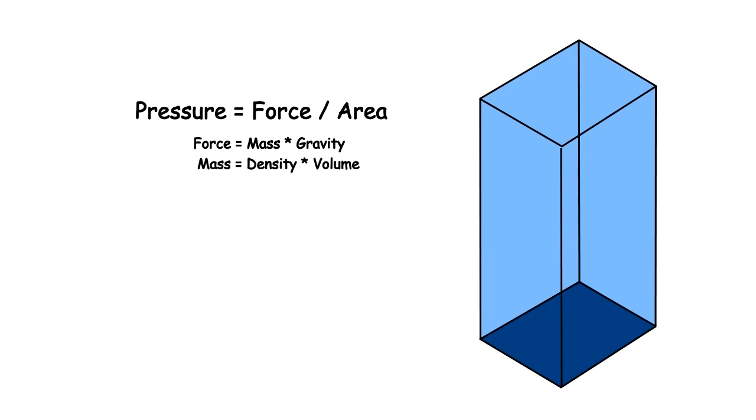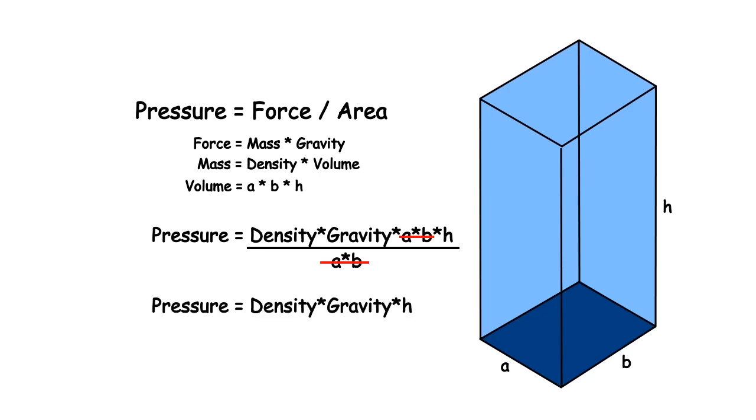The mass of the liquid is equal to the density times the volume, and the volume is equal to A times B times H. Since A times B, which is the area of the square, is also in the denominator, the A times B cancels out, and we are left with pressure being equal to density times gravity times height.